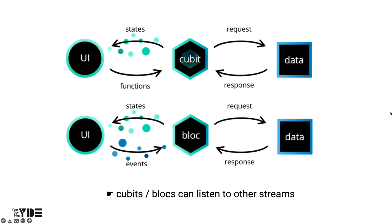Looking back at what we learned, a qubit or block puts a new state into a stream when it is generated. This means that a qubit or block can listen to that stream. That is, after subscribing to the necessary state stream, read the state value, perform the necessary processing, and then emit a new state.